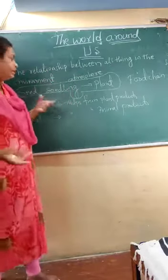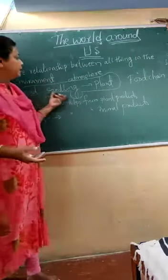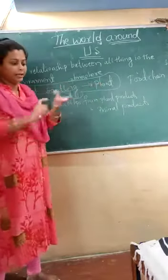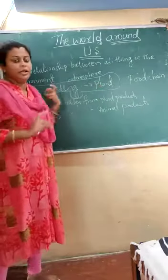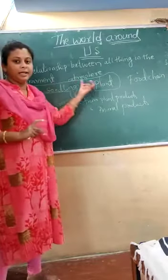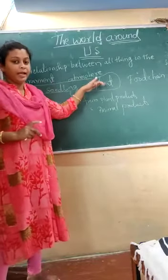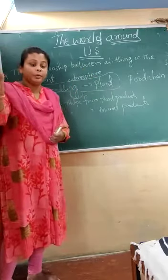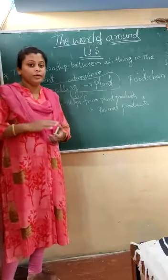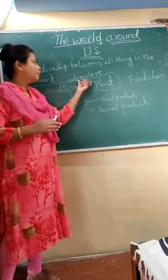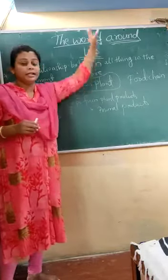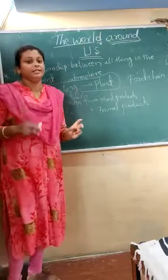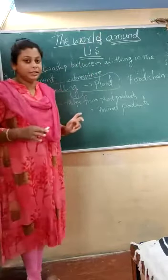You can see the chain here — seed, seedling, plant. There is a chain relationship between seed, seedling, and plant. Once the plant has grown, it has to prepare its own food. Then the atmosphere is needed, sunlight is needed. You have learned the photosynthesis process.